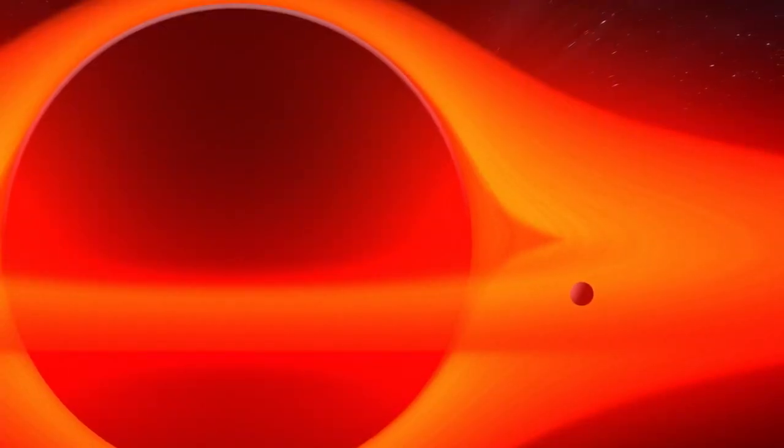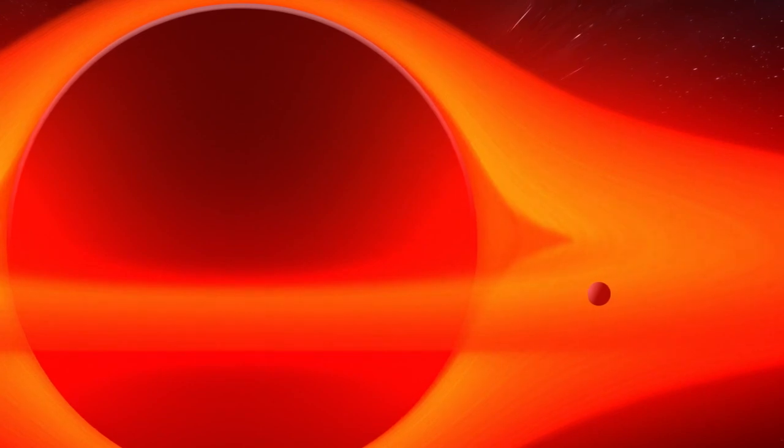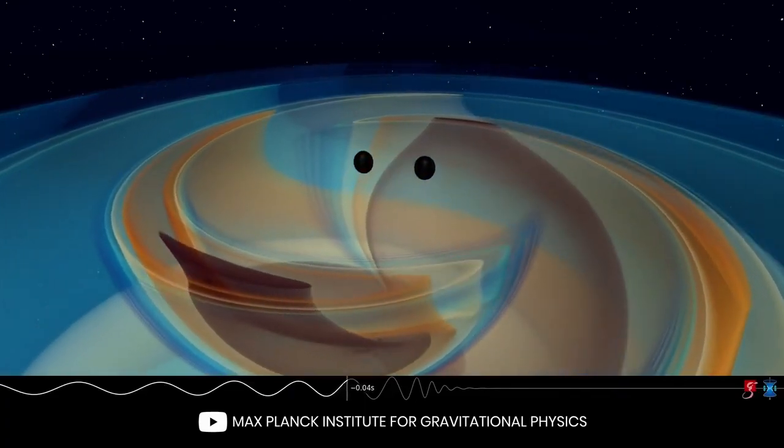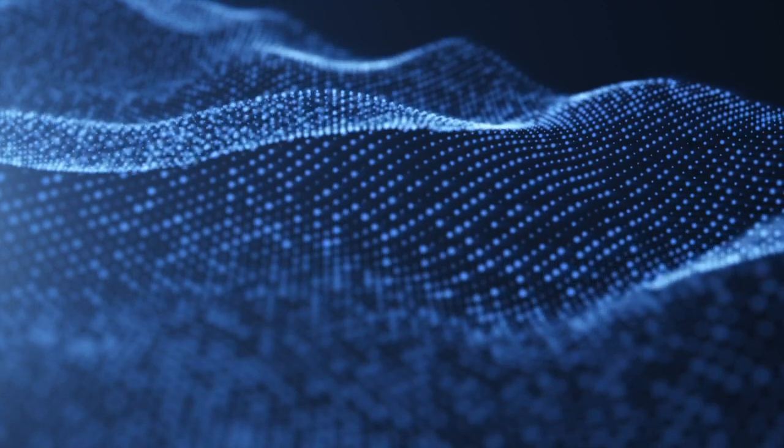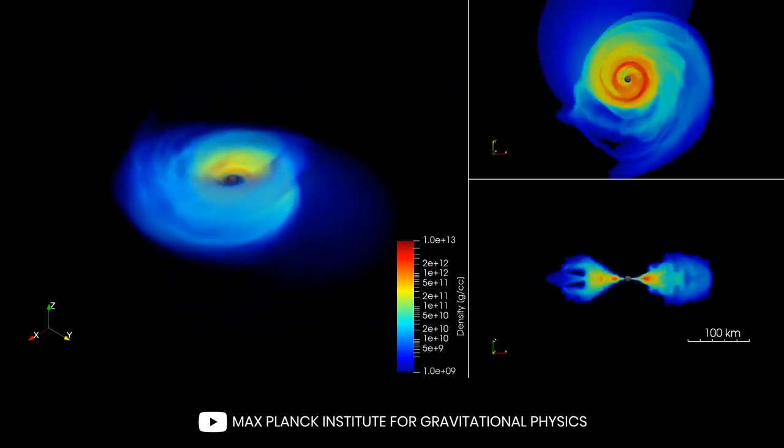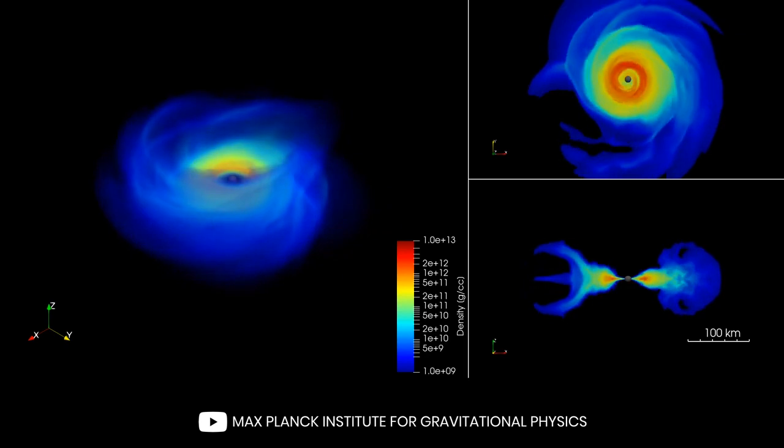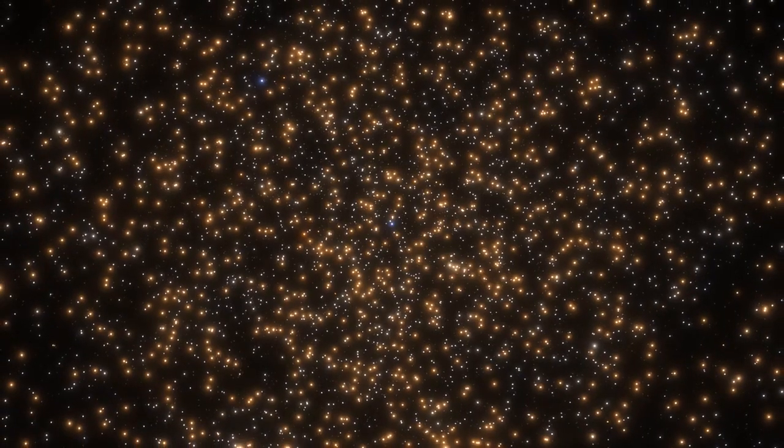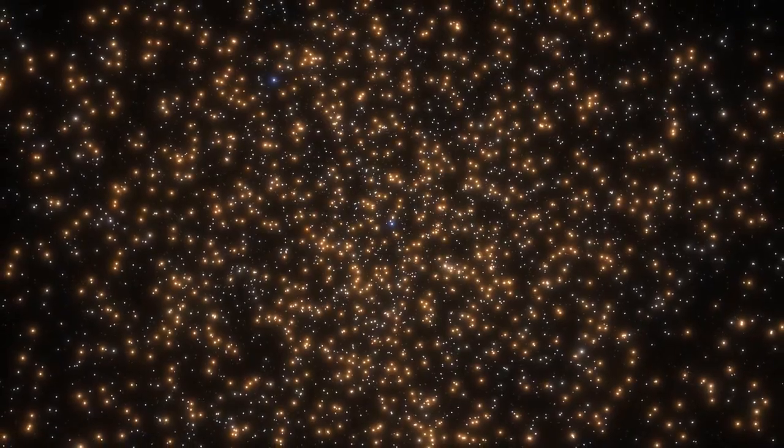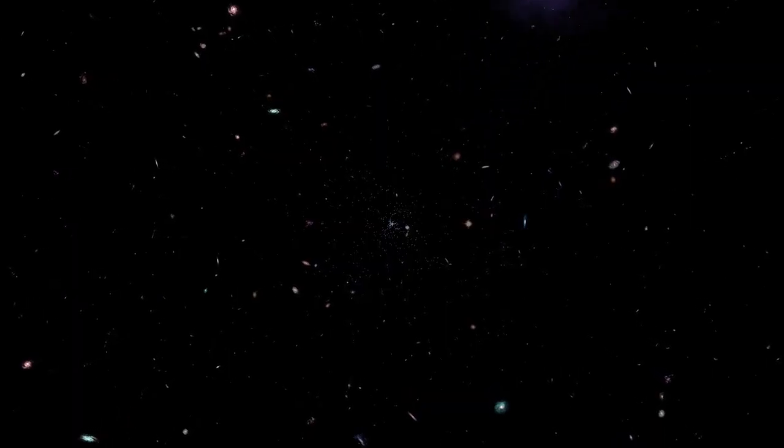Another puzzle is the flatness problem. Einstein's theory of relativity reveals that massive objects curve spacetime, influencing the motion of matter within it. Locally, stars, galaxies, and black holes cause irregularities in this spacetime fabric, but when observed on a larger scale, these irregularities average out, resulting in a smoother structure. This overall uniformity suggests that the universe is flat on a grand scale. So how could something like this happen?